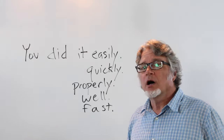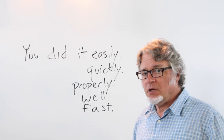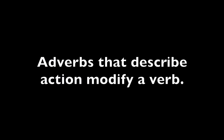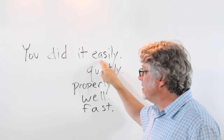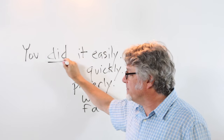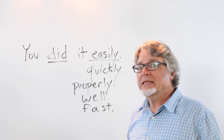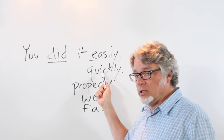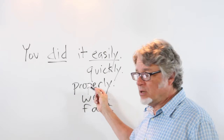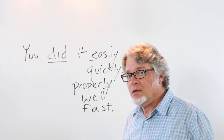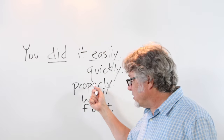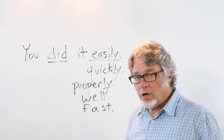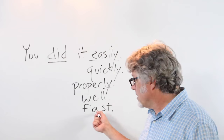Adverbs provide information about how somebody did something — we use these for action verbs. Here are some adverbs used with a main verb: you did it easily, you did it quickly, you did it properly. Notice all of these have -ly endings. Some adverbs don't have -ly endings — you can also say you did it well, or when talking about speed, you did it fast.